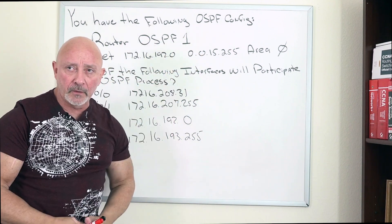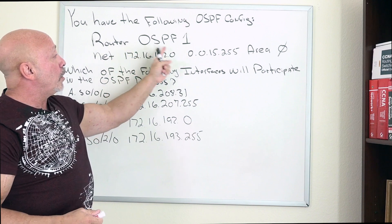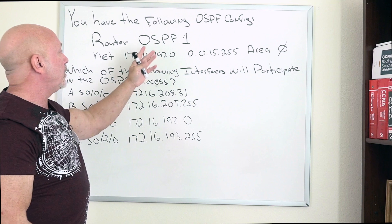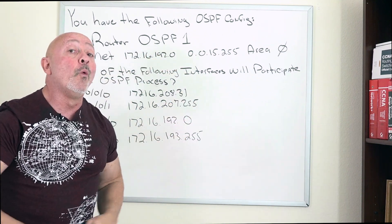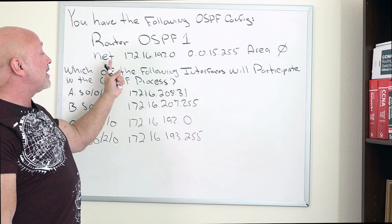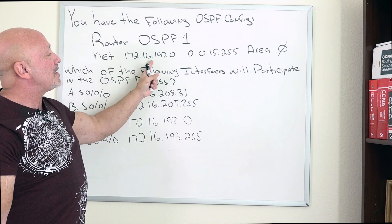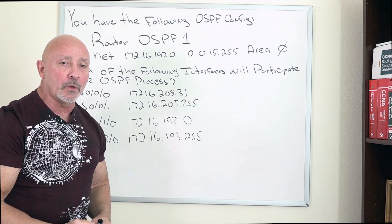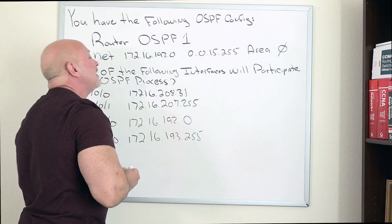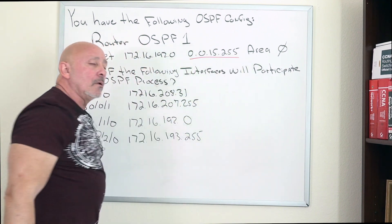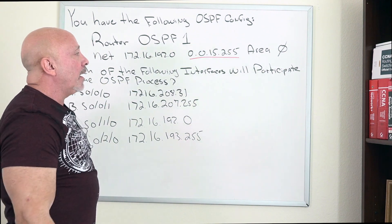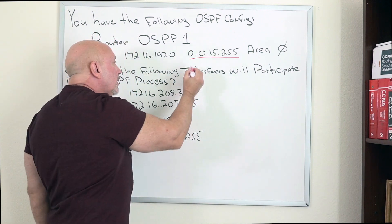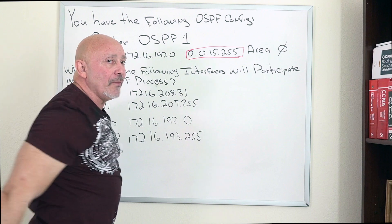The question was: you have the following OSPF configuration. Router OSPF 1 - this is a process ID number, it's local to the router. Then it says network 172.16.192.0, that is a network. Remember OSPF link state, you put the whole network that you're in. Then you have this guy, this is your wildcard mask 0.0.15.255, and then this is the area you're in, which is area 0. We all know we need to be in the same area.